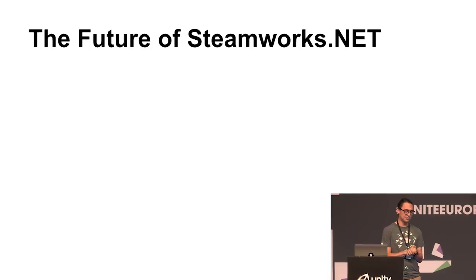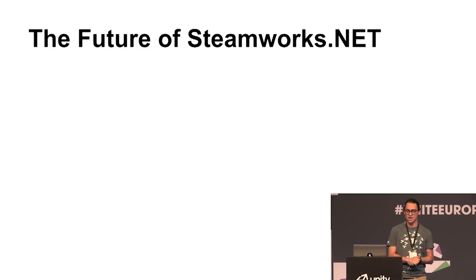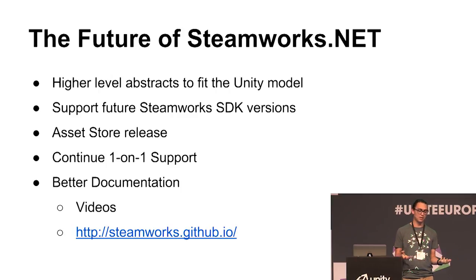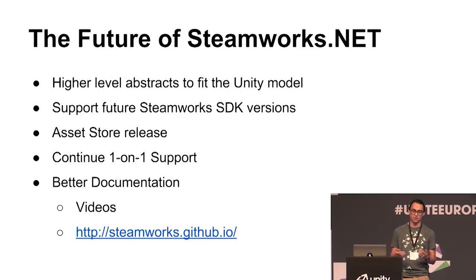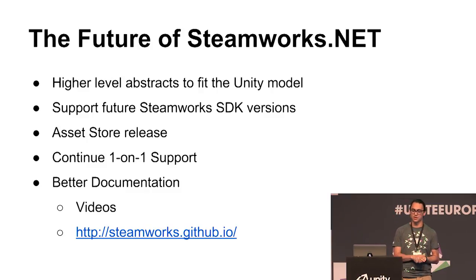What's the future of Steamworks.net? As of now, there's only one thing we don't support, and that's all the Vive stuff — because a lot of it isn't available yet. Right now we don't have a high and low level API, it's just one, but we want to start doing that and we've slowly started. That kind of fits the Unity way, because Unity programmers are all over the place with skill levels.